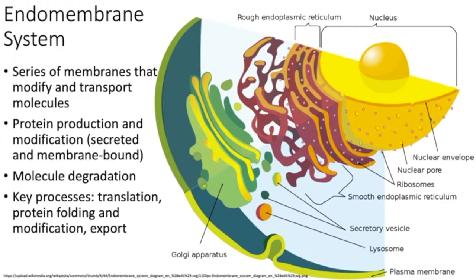The rough ER is close to the nucleus because that's where the messenger RNA is. When a ribosome grabs onto a messenger RNA with a signal sequence indicating that the protein should be secreted or embedded in a membrane, it binds to the ER. The smooth ER is just the next step. Translation happens at the rough ER, where proteins are shoved into the endoplasmic reticulum.